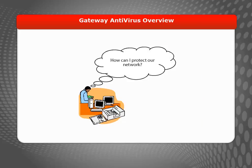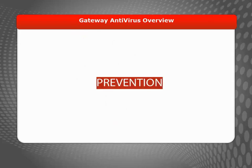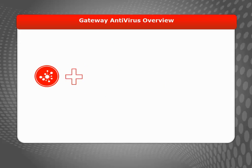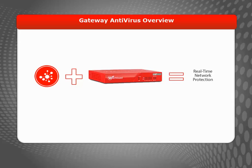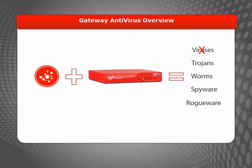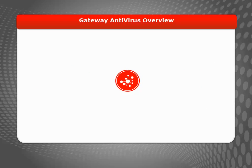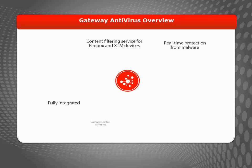The best way to defend your network from infections and key logging is with prevention. Gateway Antivirus, or Gateway AV, is a fully integrated security subscription for WatchGuard Firebox and XTM devices that can help you protect your network from these types of attacks. Gateway AV works in tandem with your Firebox or XTM device to provide real-time protection against viruses, trojans, worms, spyware, and rogueware. Gateway AV scans traffic on all major protocols using continually updated signatures to detect and block all types of malware.